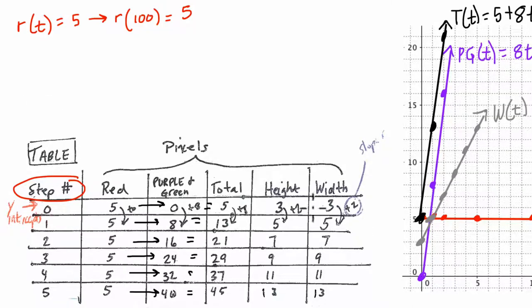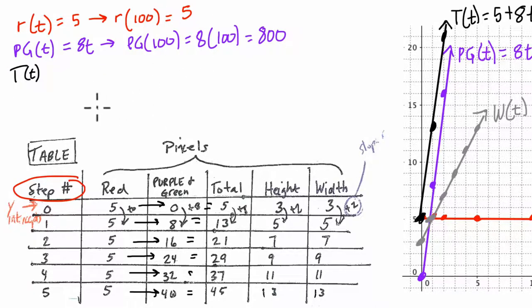What about the purple and green? Well, PG based on t or step number equals 8 times t. So if I want to know how many purple and green there will be at step 100, I'm simply going to multiply 8 by 100. Or we could say I'm plugging in 100 for the variable here. So it's going to be 800 purple and green. Isn't that crazy? And then for the total next. For the total, we kind of combine these two. And you could just add 5 and 800, which is the beauty of math, of course. There's many ways to get to the answer. But I want to go to the equation directly. And I want to know what the total pixels will be at step 100. It's going to be 5 plus 8 times 100 and that's 805. Isn't that cool? It's just a combination of 5 and 800. It's all the pixels put together.